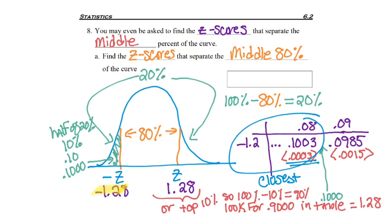So we now have our two z-scores, because whenever you're finding a middle percentage, you're always going to be finding two z-scores. But as most of you guys are familiar with in math, because you've got the same digits with only a positive and a negative sign being the only difference, you could just write plus or minus 1.28 for the z-scores that separate the middle 80%.